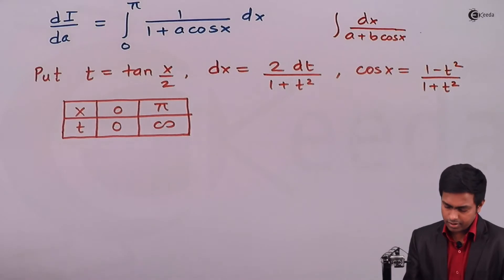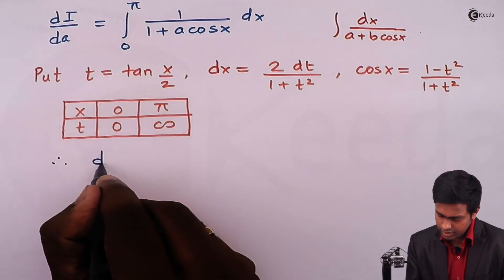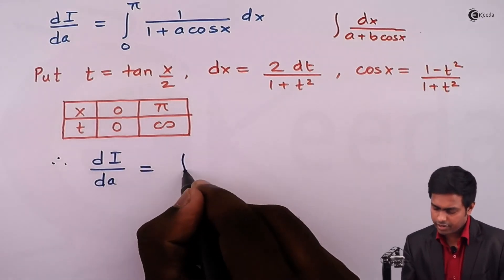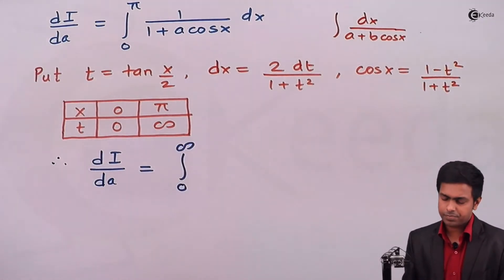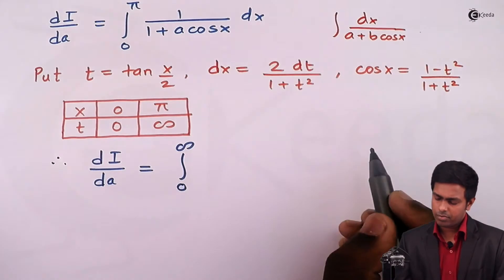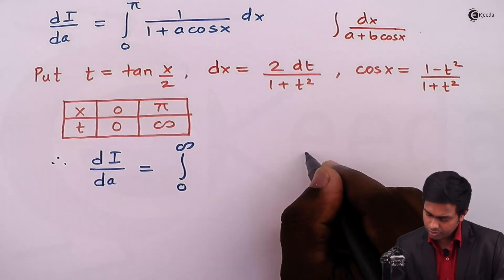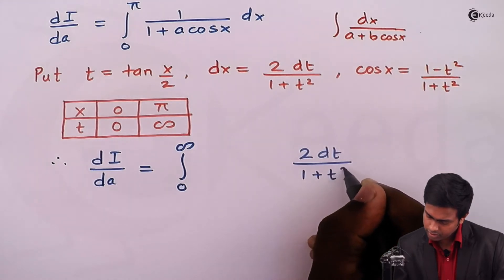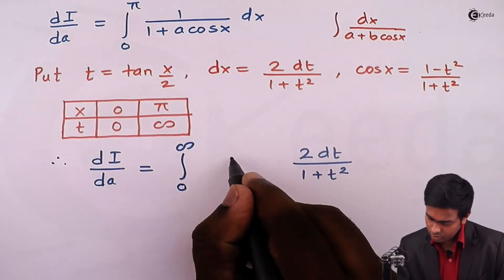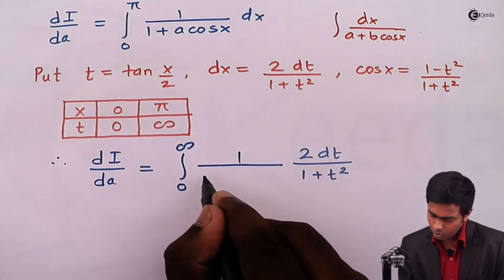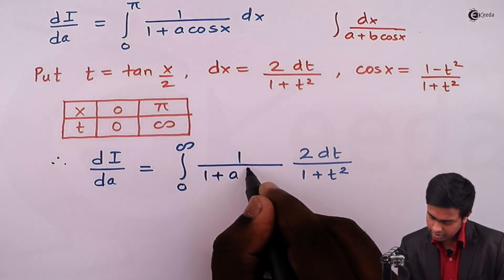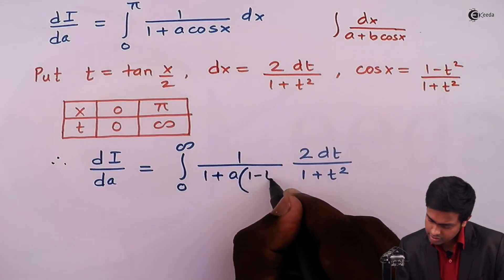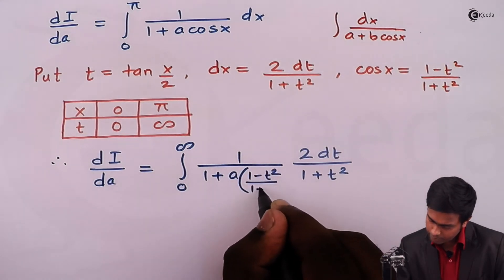Therefore, dI/da becomes the integral from 0 to ∞ of [2dt/(1 + t²)] multiplied by 1/(1 + a·cos x), where cos x = (1 − t²)/(1 + t²).